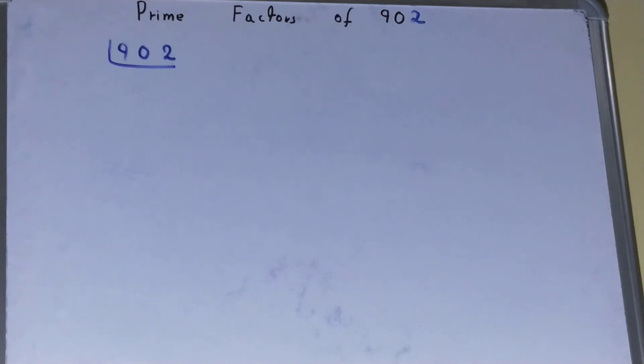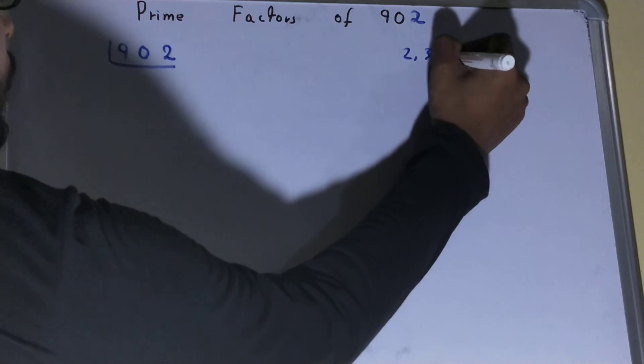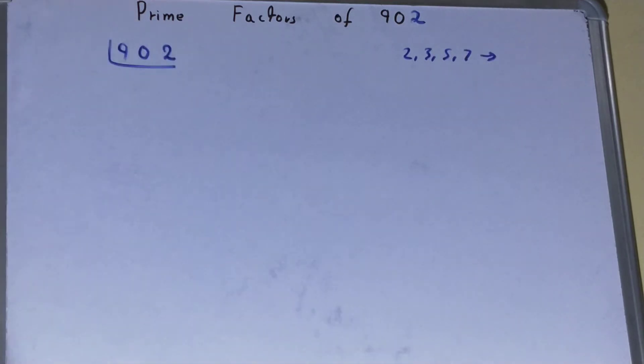Before solving this any further, you must know what prime numbers are. Prime numbers are numbers that are divisible by 1 and the number itself, like 2, 3, 5, 7, and so on.